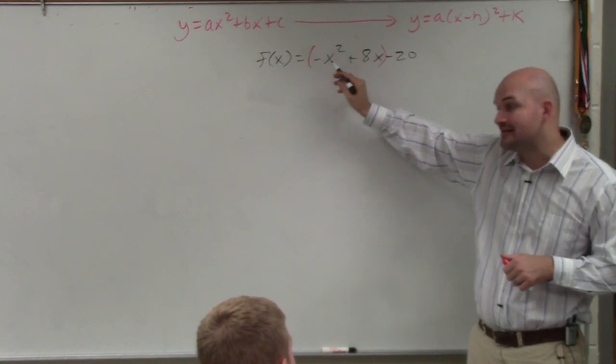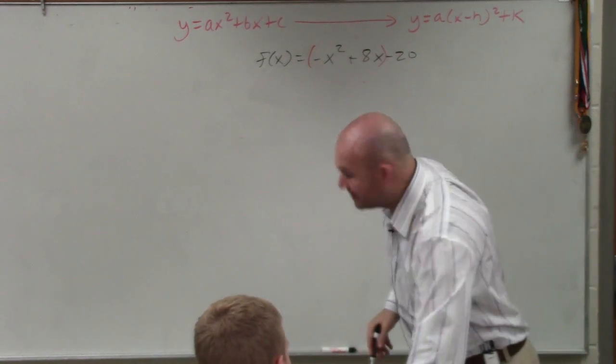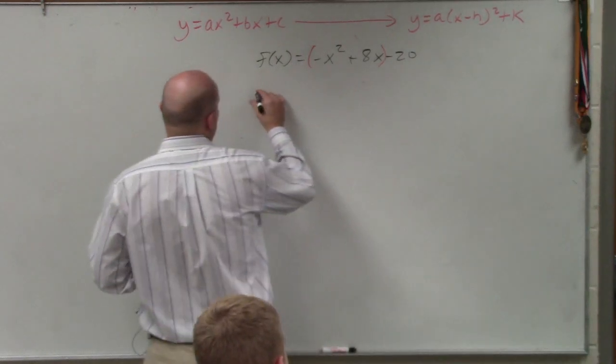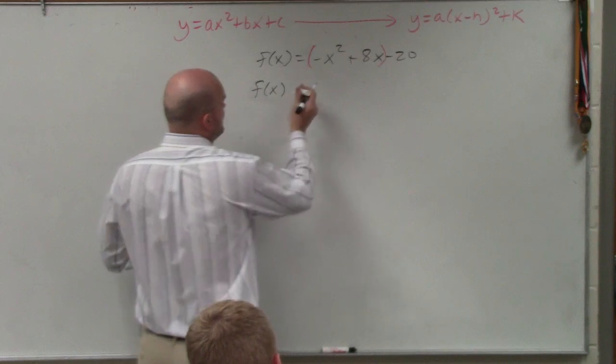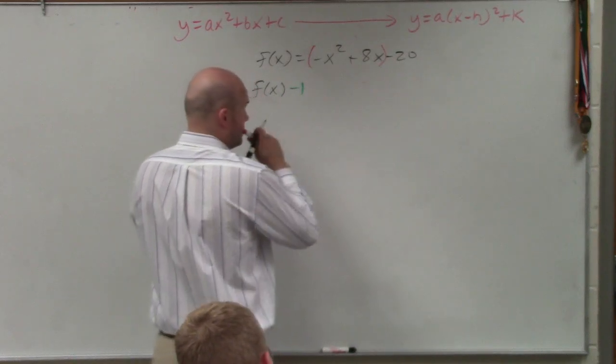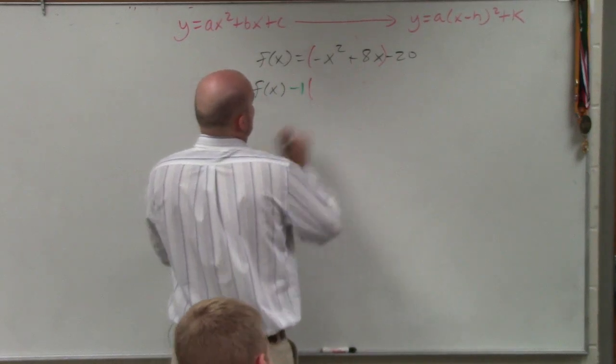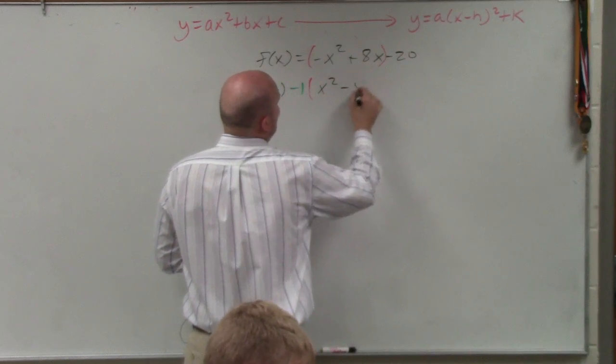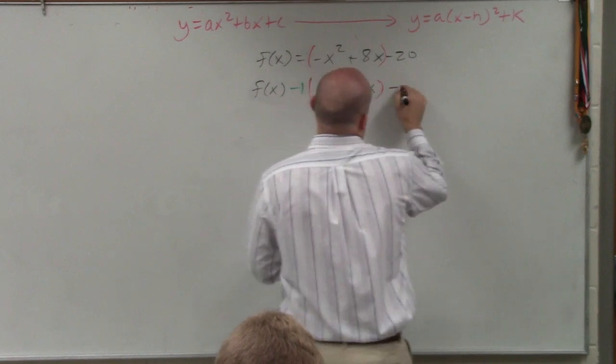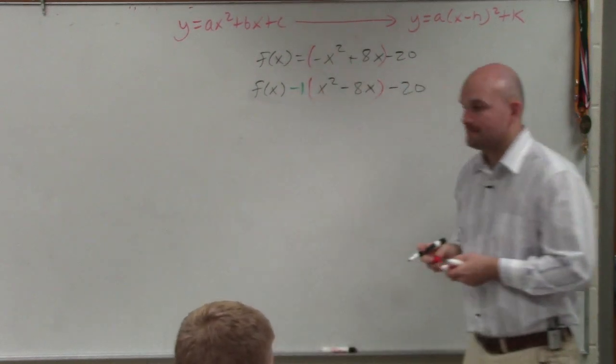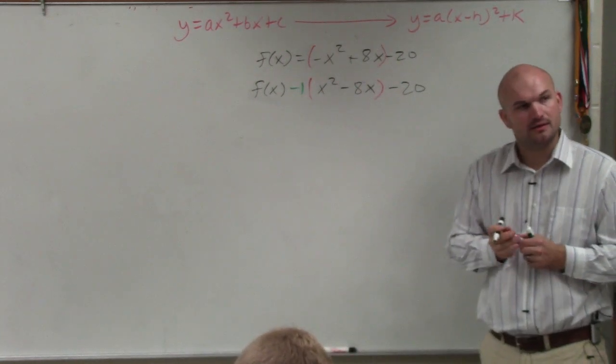No, a is equal to negative 1. So what I have to do now is factor out that negative 1. And you're only going to factor it out of what you grouped. So when I factor out a negative 1, I'm now left with x squared minus 8x minus 20. Does everybody see that?